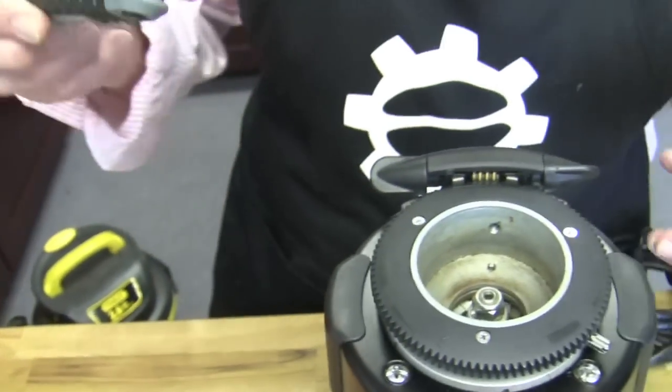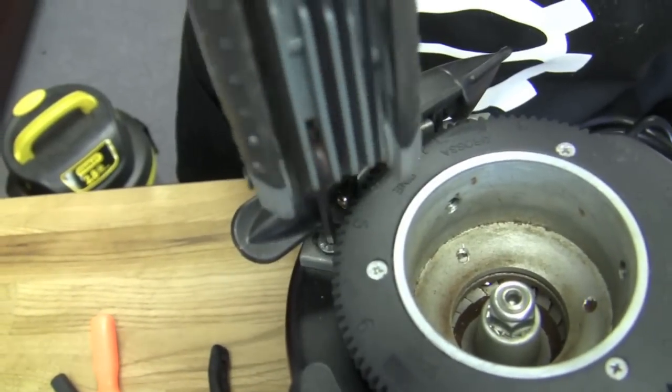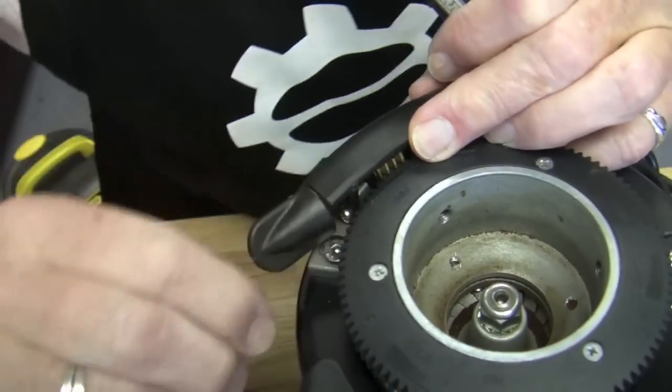So you have to take this off so that you can take the top burr off. Allen wrench, number three, right back here. These bad boys right here, and I think this knob comes off.